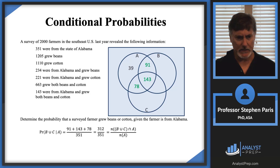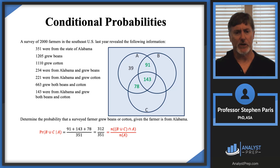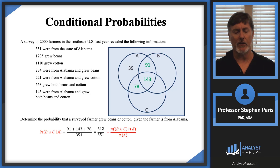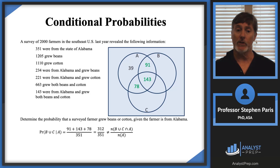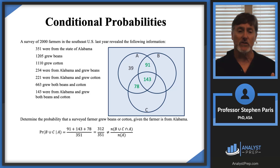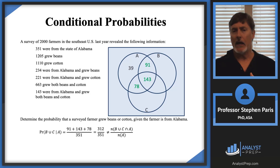Be a little bit careful in the numerator of that last expression. Notice I have B ∪ C in parentheses and then intersect A. You can't be lazy with your notation. If you write B ∪ C ∩ A without the parentheses, it's an ambiguous statement — are you doing (B ∪ C) ∩ A, or B ∪ (C ∩ A)? If you do those different ways, you get different numbers. So don't be lazy.